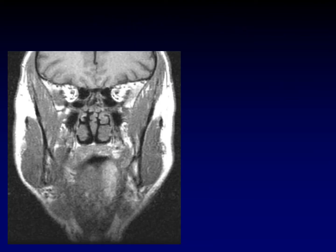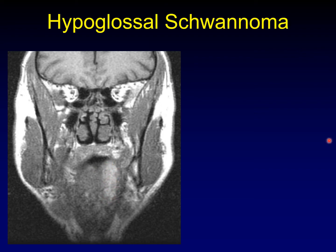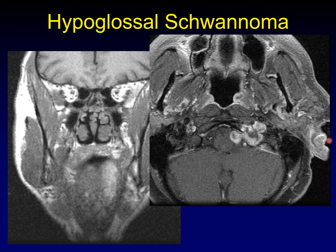Here is another example on coronal T1 without contrast. The bright signal on one side of the tongue represents fat — fatty replacement of the hemi-tongue — while the other side shows normal muscle. Turning attention to the hypoglossal canal, we see characteristic schwannoma enhancement in exactly the expected location: the hypoglossal nerve running obliquely through the lateral medullary cistern and then through the hypoglossal canal — a hypoglossal schwannoma in this case.